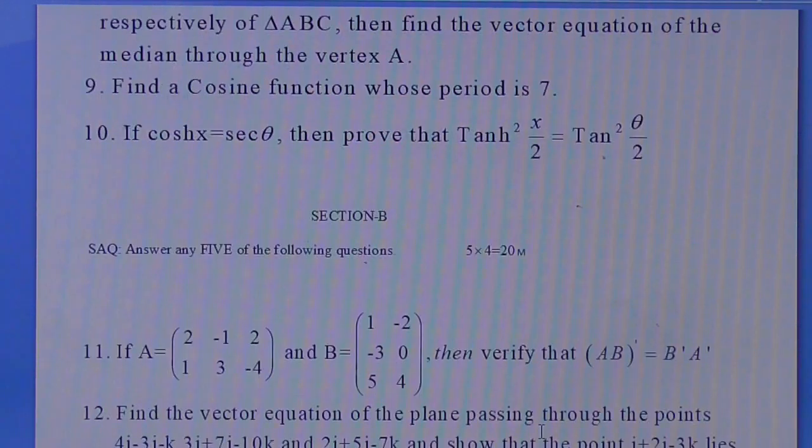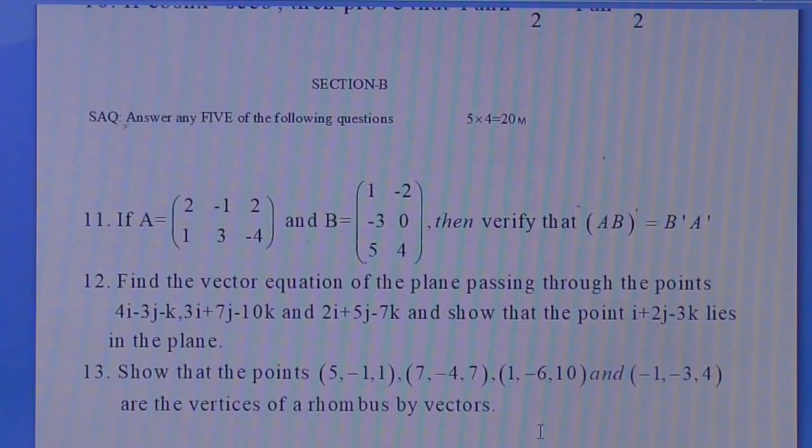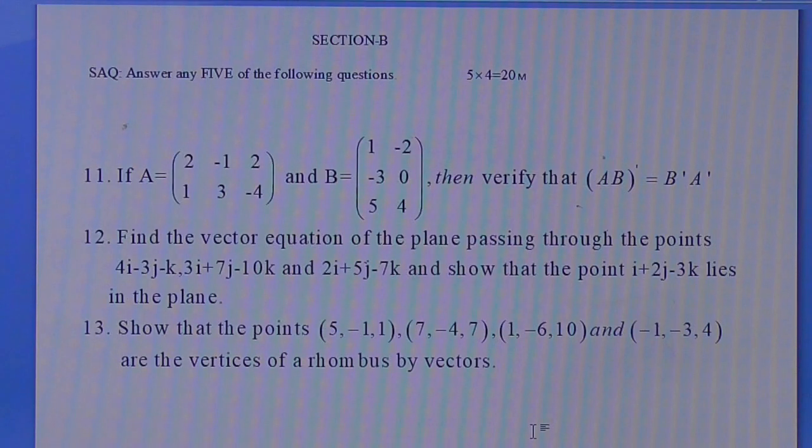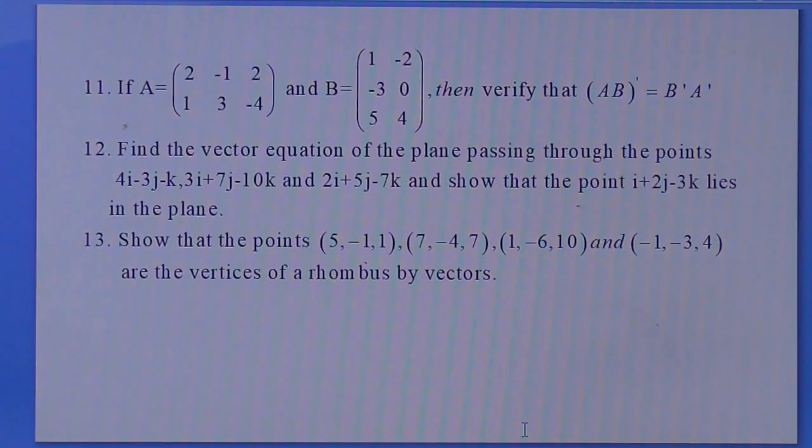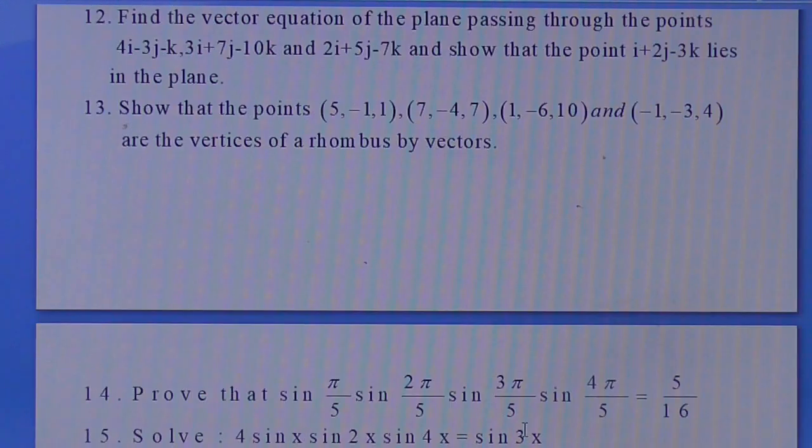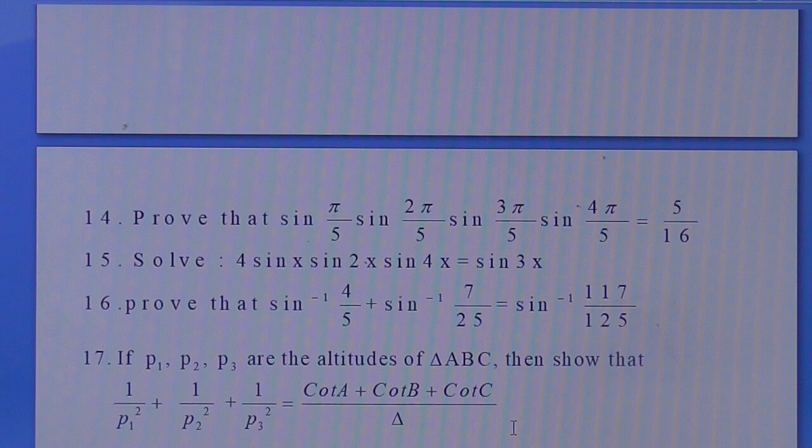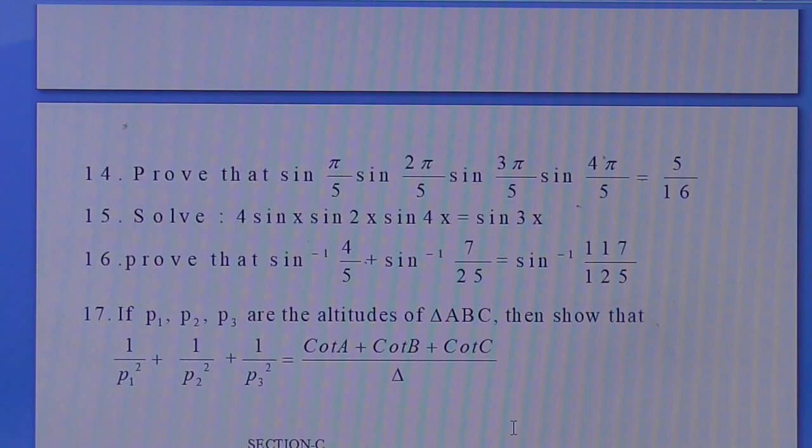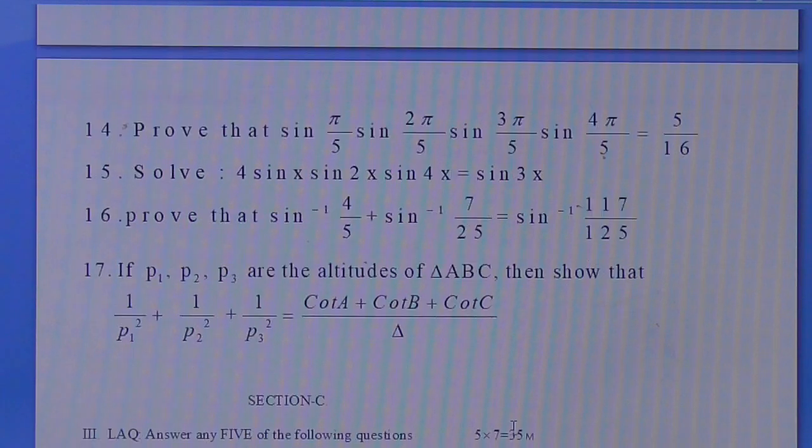This is Section B, four marks questions. Question 11: AB whole transpose equals B transpose into A transpose. Now questions 14 to 17 in Section B.